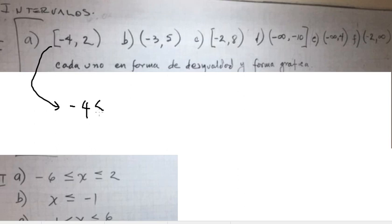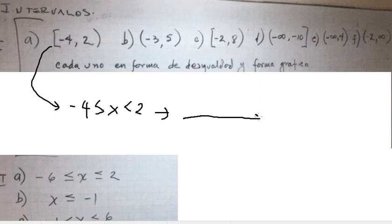For question A, s is greater than or equal to negative four and s is smaller than two. This is because of the bracket and parenthesis notation. We have the black dot at negative four and the white dot at positive two.